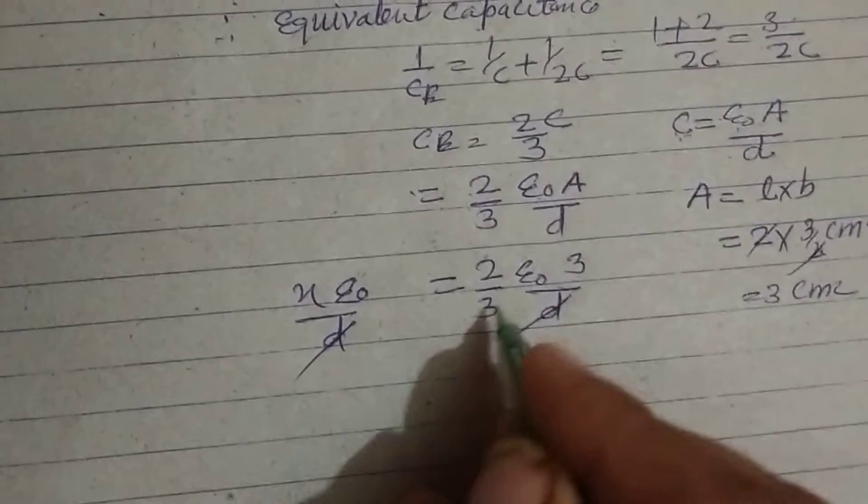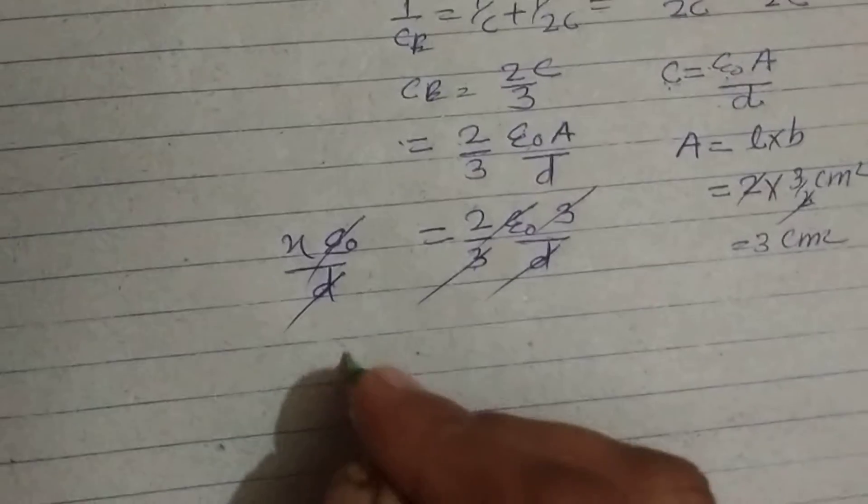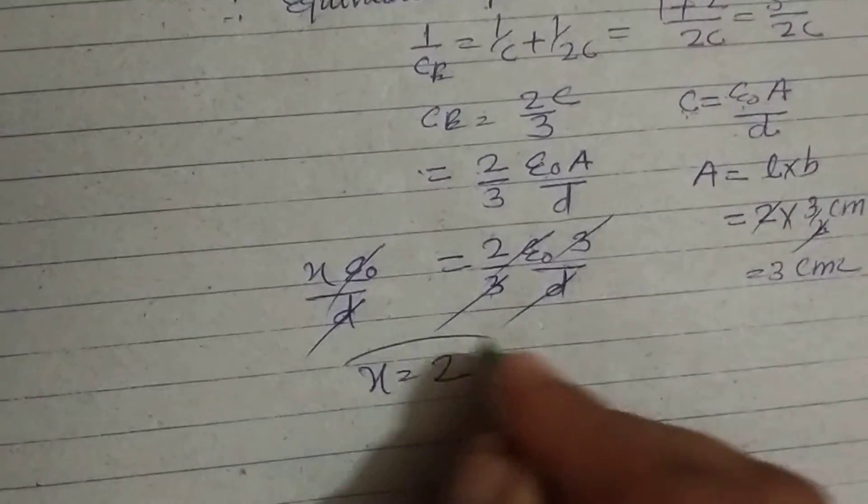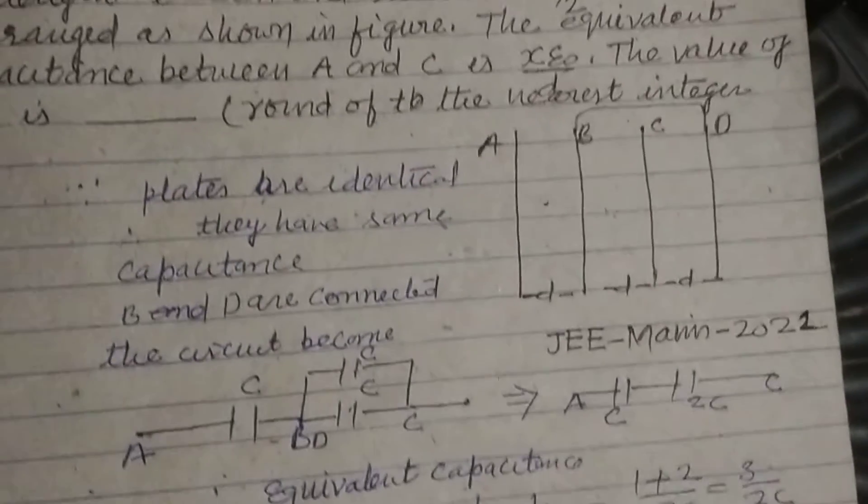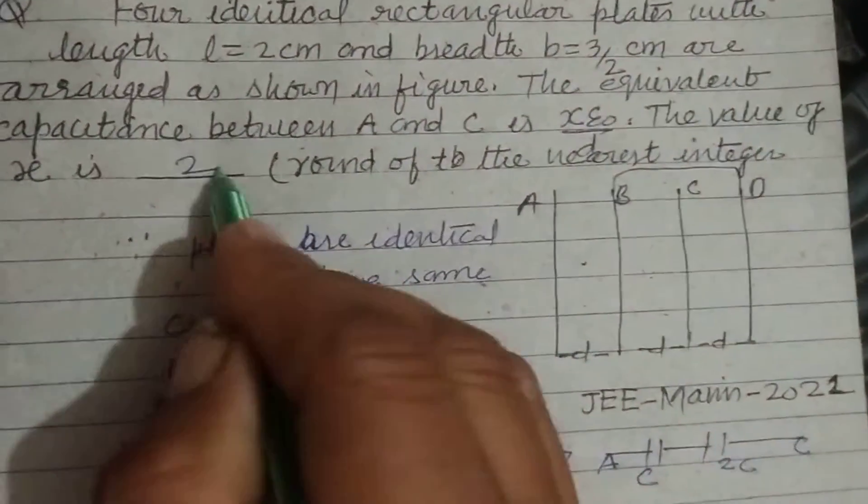So d d cancel, 3 3 cancel and epsilon not also cancel. Therefore x equal to 2. So this is our answer that value of x is 2.